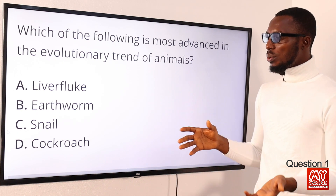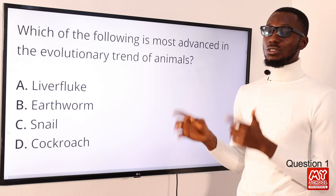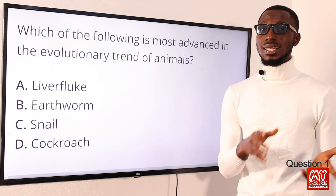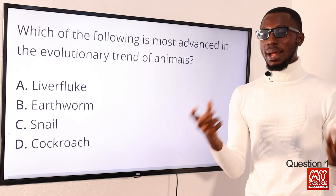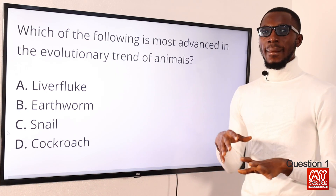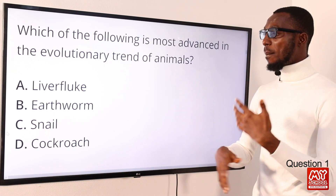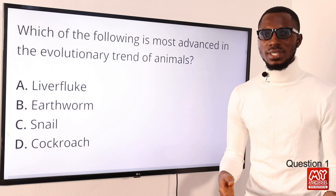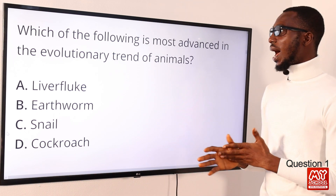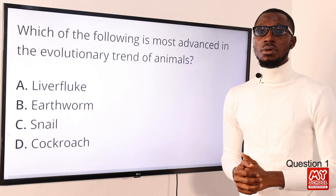But if we take a look at cockroach, option D — it belongs to the phylum Arthropoda, which is the largest phylum in the animal kingdom. Cockroach belongs to the class Insecta, and these are widespread and well adapted due to certain features: segmented bodies, jointed limbs that allow complex movements, a well-developed digestive system, and a specialized respiratory system. This accounts for cockroach being the most advanced in the evolutionary trend of animals. The correct answer is option D.